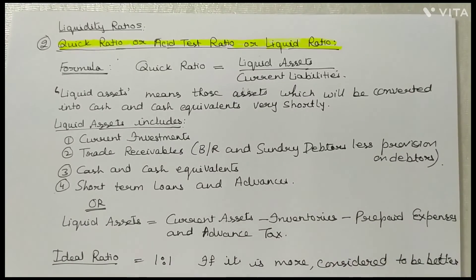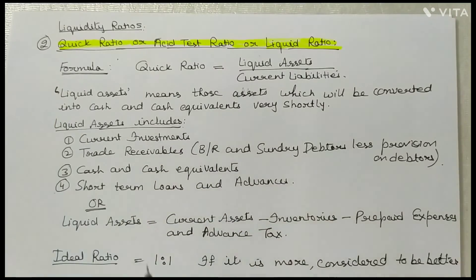The ideal ratio for Quick Ratio is 1:1. If it is more than 1:1, it is considered to be better.